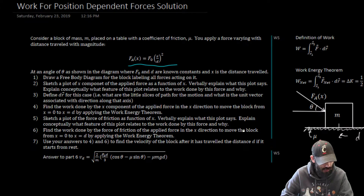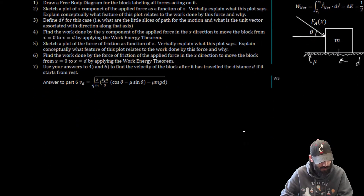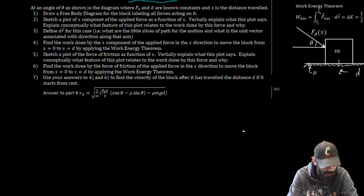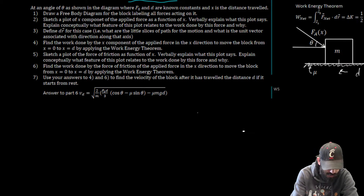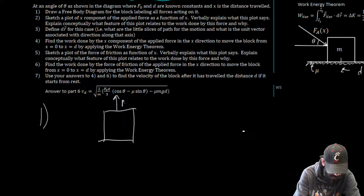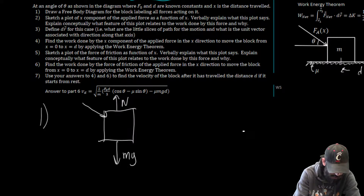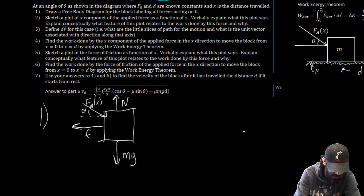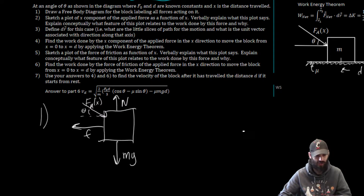Let's start with question one: draw a free body diagram for the block labeling all forces acting on it. We have the block with a normal force, a force of gravity, an applied force F_A of X at angle theta, and a force of friction — so four forces acting on it.